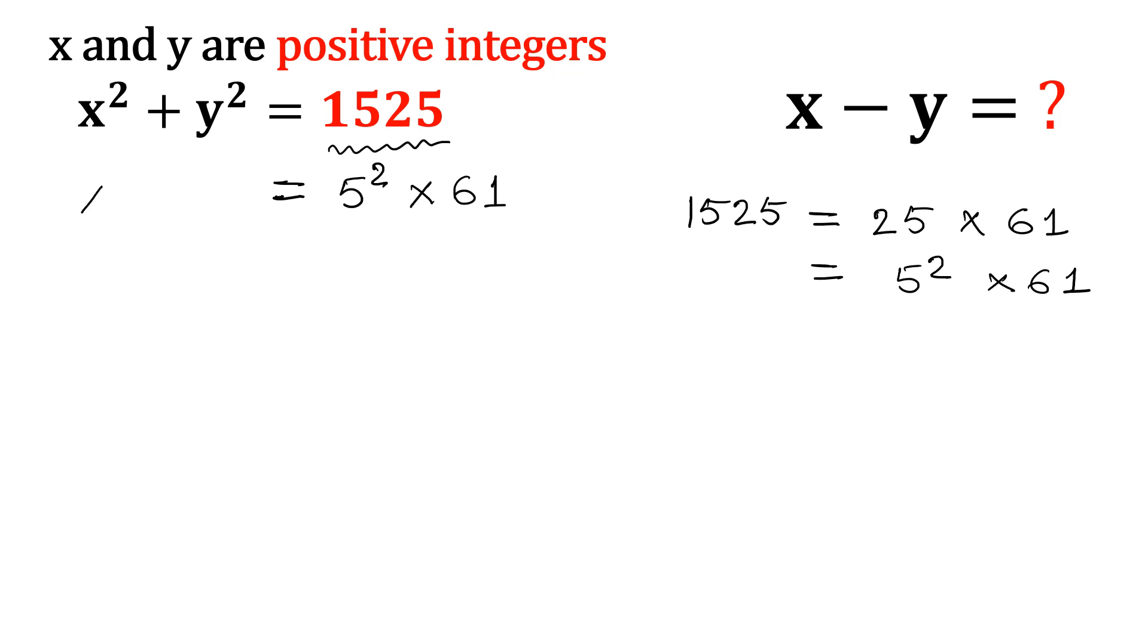If you observe, this is x square plus y square is equal to 5 square into 61. So that value is somewhere squares are there. So let us consider x is equal to 5p and y is equal to 5q.